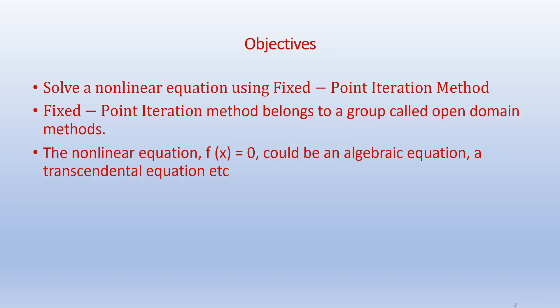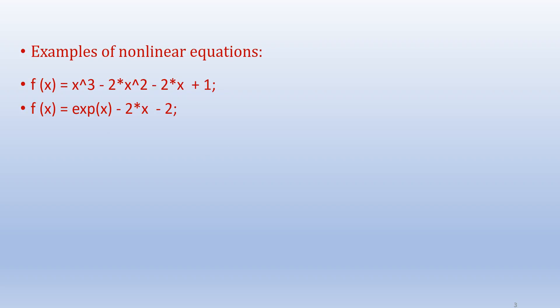The nonlinear equation f(x) = 0 could be an algebraic equation or a transcendental equation. An algebraic equation is one that has x, x squared, and other powers of x, etc. In a transcendental equation, which is a function of x, we have in addition logarithmic, exponential, and trigonometric functions. Some examples of nonlinear equations are given below. The first one is an algebraic equation and the second one is a transcendental equation.